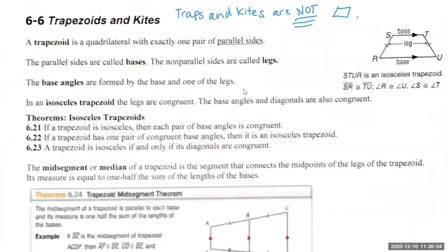If you think of the definition of a parallelogram — how many sets of sides do you need to be parallel in order to be a parallelogram? There's only two sets of sides; you need both sets of sides to be parallel. Can you guys look at the trapezoid? When you draw a trapezoid, you're only drawing how many sets of sides parallel?